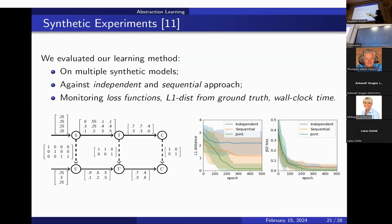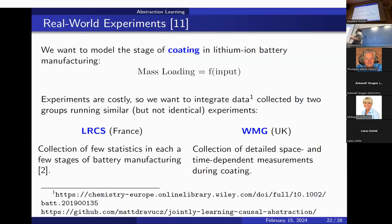Our approach performed better than the competing methods, which is not surprising since they cannot exploit the joint information across diagrams. The most interesting application came from a real-world problem: the coating of lithium-ion batteries. Specifically, we studied how to control the thickness of the battery coating — the mass loading — as a function of controllable inputs.